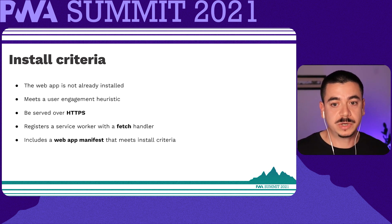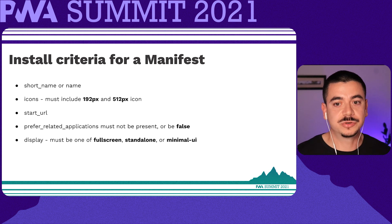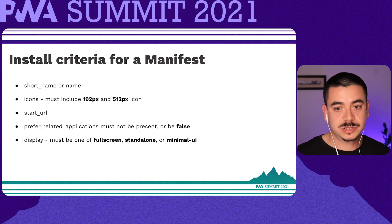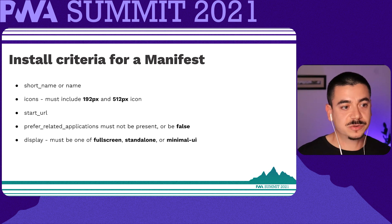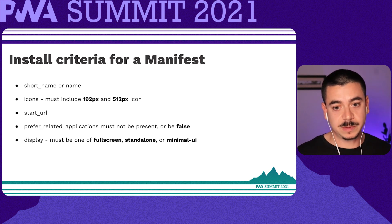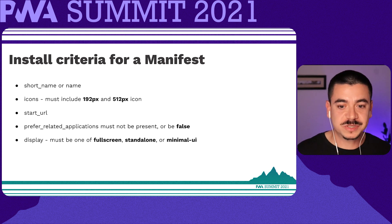You also need to meet the install criteria for a manifest file, like providing your short name or name. You must provide at least the short name and name property. If both are provided, short name is used on the user's home screen, launcher, or other places where space may be limited. Name is used when the app is installed and launched on mobile. When users install your progressive web app, you can define a set of icons for the browser to use on the home screen, app launcher, task switcher, splash screen and so on.